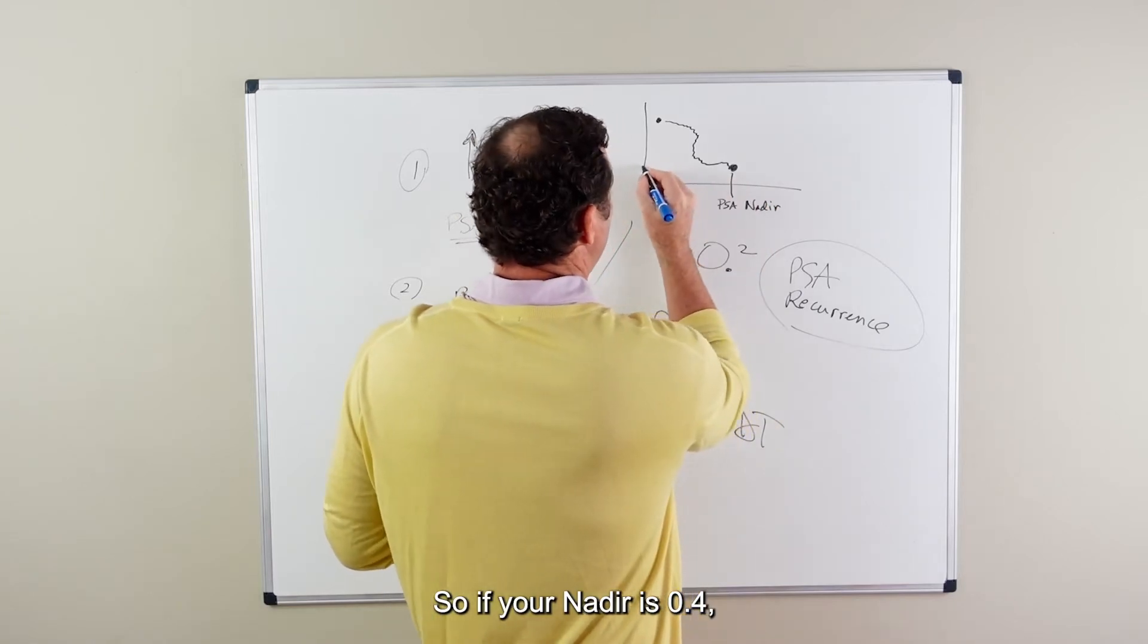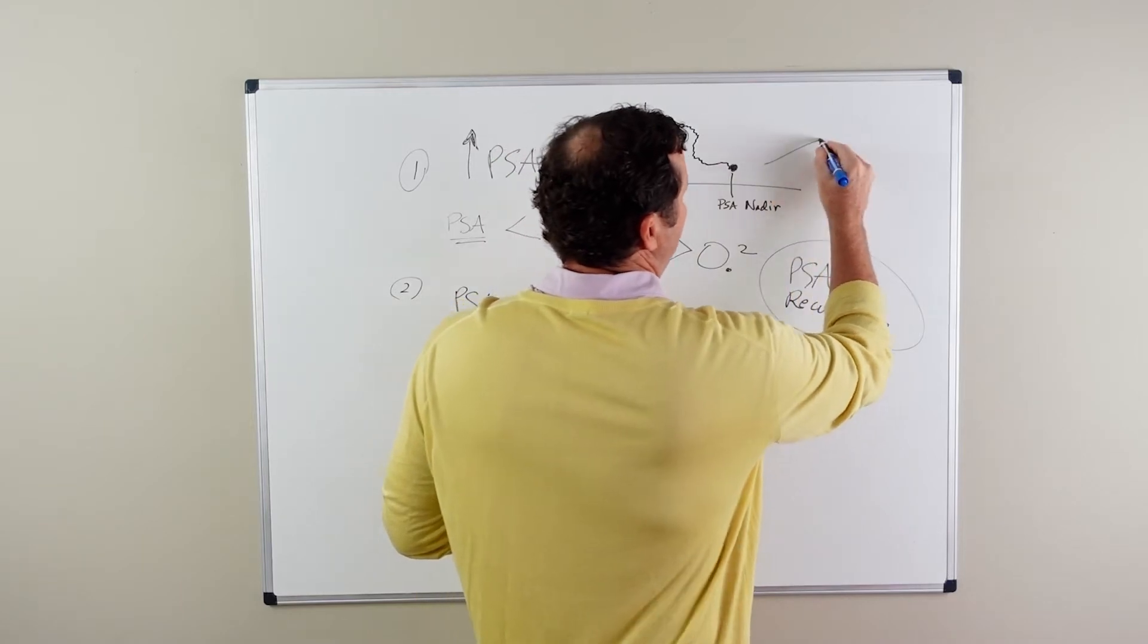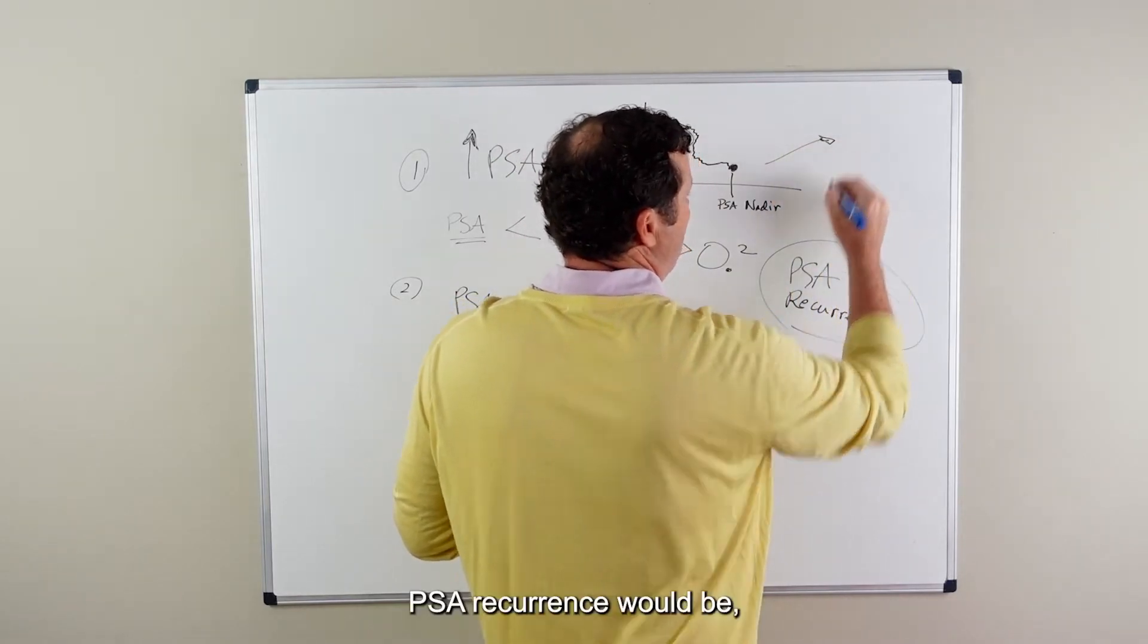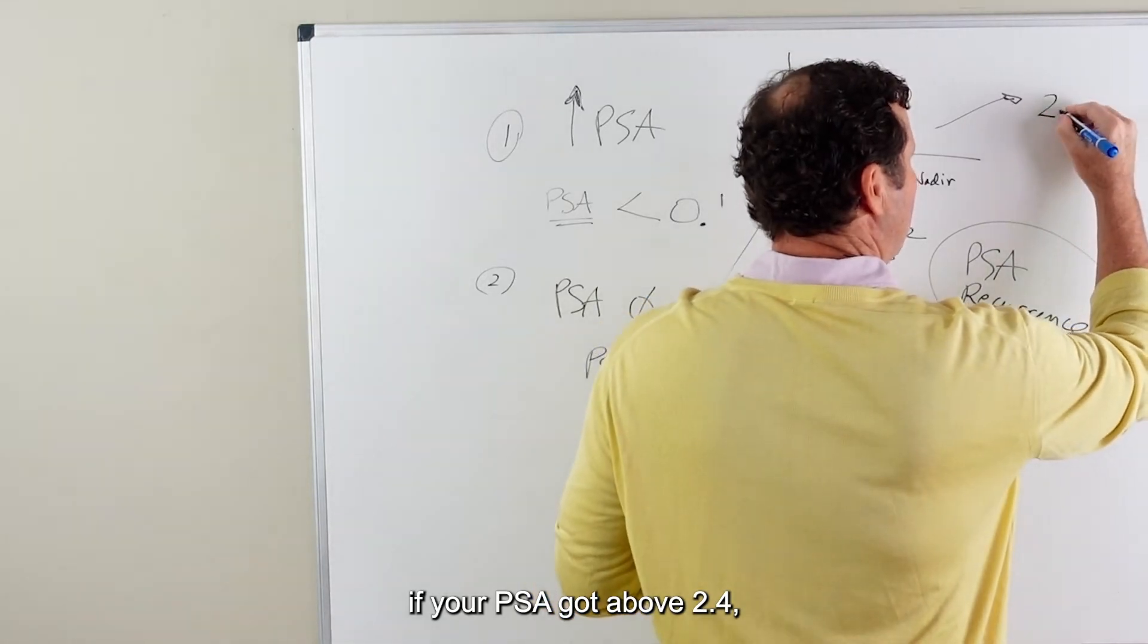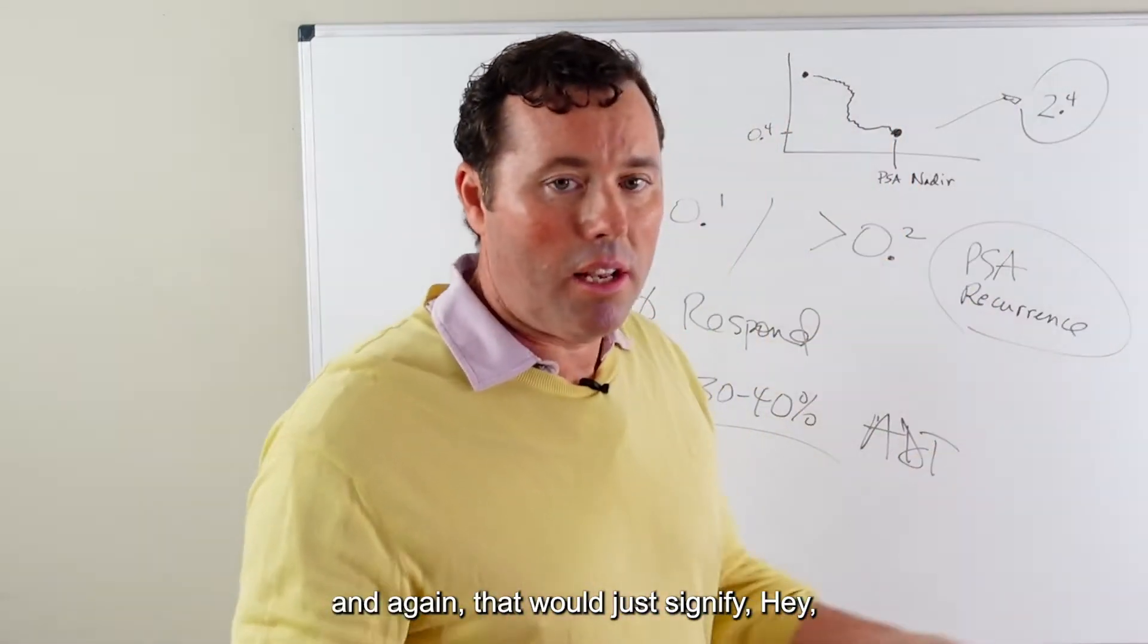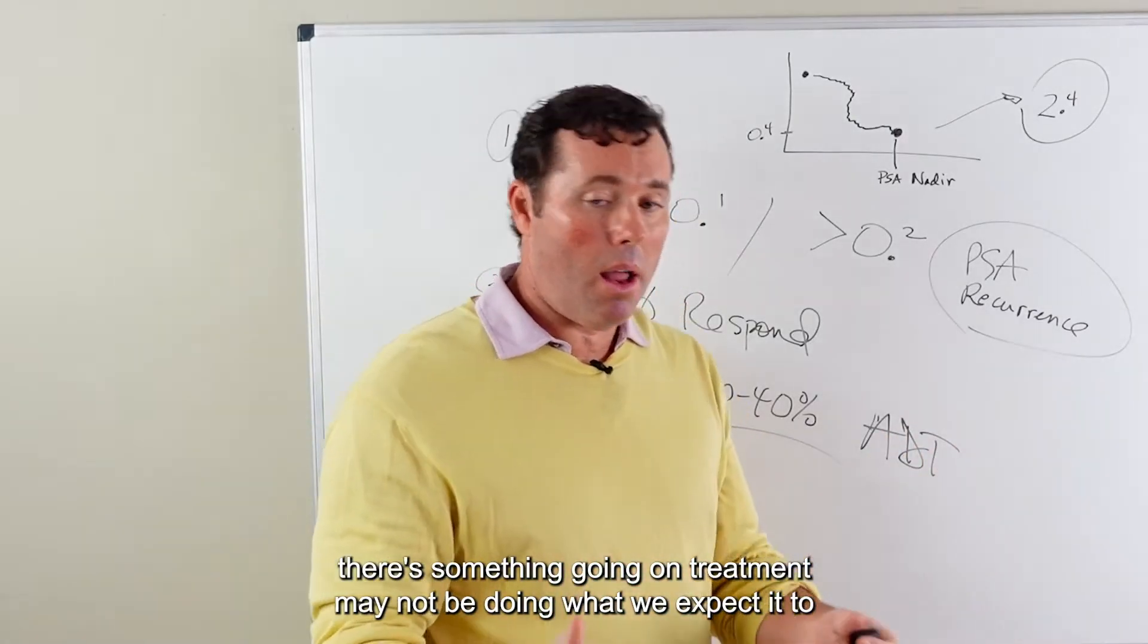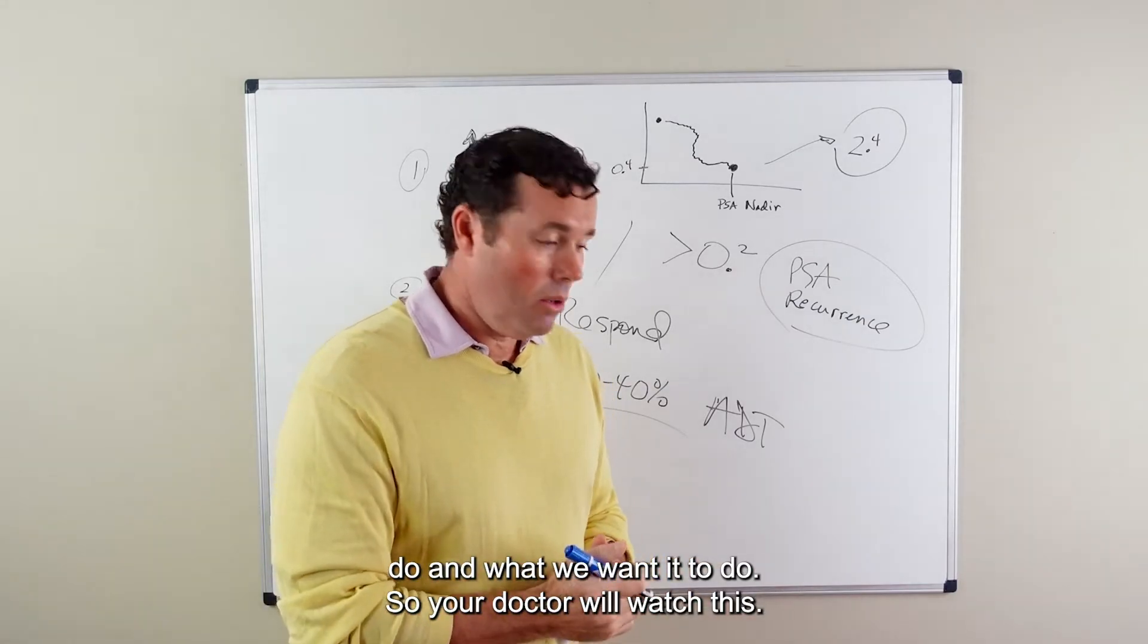So if your nadir is 0.4, PSA recurrence would be if your PSA got above 2.4. And again, that would just signify, hey, there's something going on. Treatment may not be doing what we expect it to do and what we want it to do.